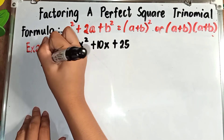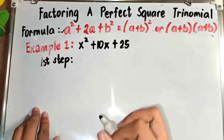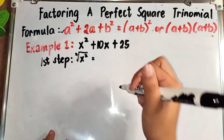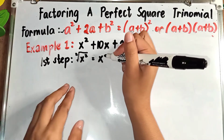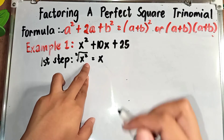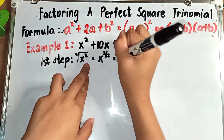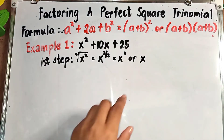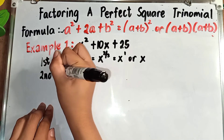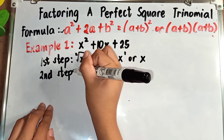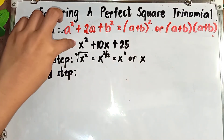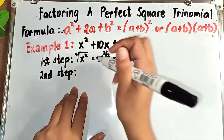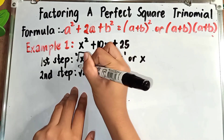Step 1: Find the square root of the first term. The square root of x² is x, because we divide the exponent by 2 — so 2 ÷ 2 = 1, giving us x. Step 2: Find the square root of the third term. The square root of 25 is 5, because 5 × 5 = 25.